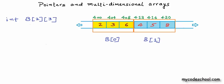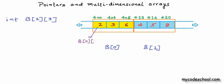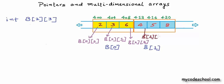b[0] spans from byte address 400 to 411. We have three integers with four bytes each. The first integer, accessed as b[0][0], takes 4 bytes starting at address 400. The next integer b[0][1] takes the next 4 bytes starting at 404, and b[0][2] is next. Similarly, we have 4 bytes for b[1][0], 4 bytes for b[1][1], and 4 bytes for b[1][2].